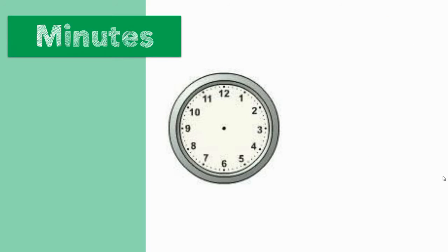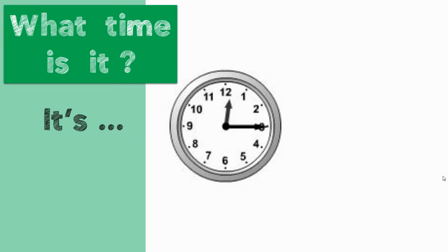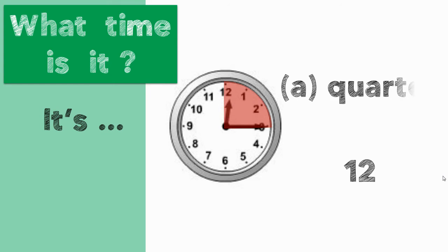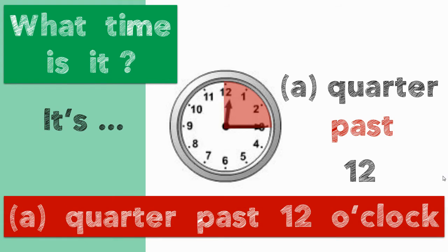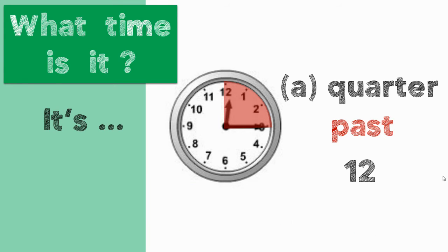When we talk about minutes, we sometimes use 'past.' When the minute hand is on the right-hand side, we say 'past.' For example, you can see that it is 12 hours and 15 minutes, so we say it's a quarter past 12. Can we say 'it's a quarter past 12 o'clock'? No — we don't use the word o'clock with minutes. We say it's a quarter past 12.